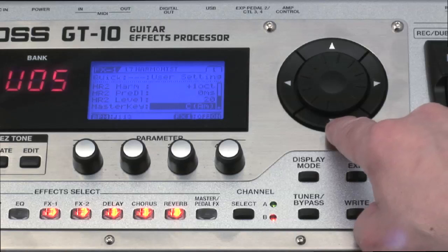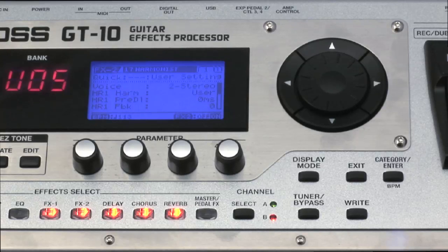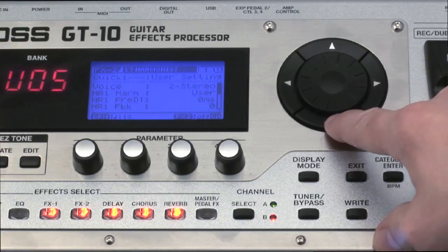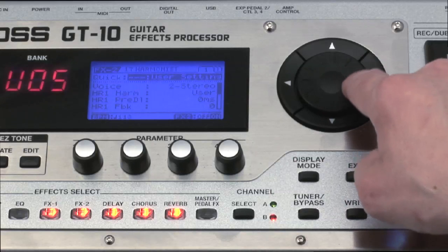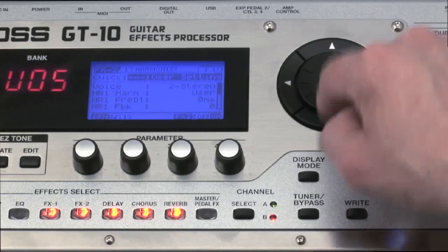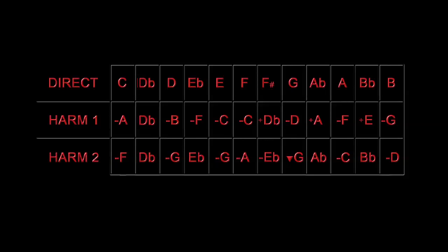Now let's set up our user notes. Press the effects two block and rotate the dial to select the harmonist effect. I'm using the C major A minor scale as my key, which only has whole notes to make it easier so we won't have to worry about sharps and flats. For both harmony parameters you need to rotate the dial all the way clockwise to select user. When you do this, an additional page will appear for each harmony. On screen you'll see the notes I'll be using — the top line represents the actual notes I'll be playing, the line directly underneath is the first harmony, and the bottom line is the second harmony.